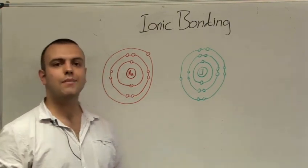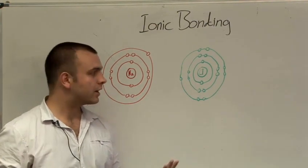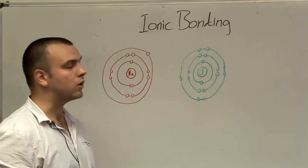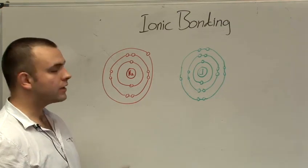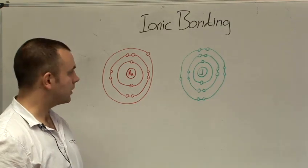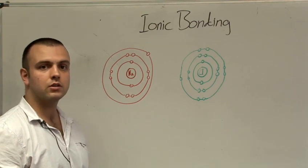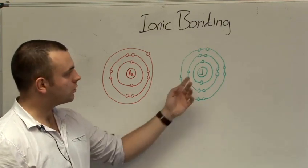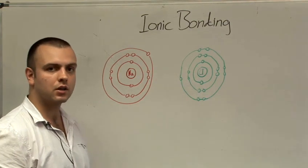Ionic bonding is the bonding found between metals and non-metals. If we look at a diagram of a metal and non-metal, we can see why. Sodium has 11 protons in its nucleus and 11 electrons orbiting it. This means it has an overall charge of zero. Chlorine similarly has 17 protons and 17 electrons.